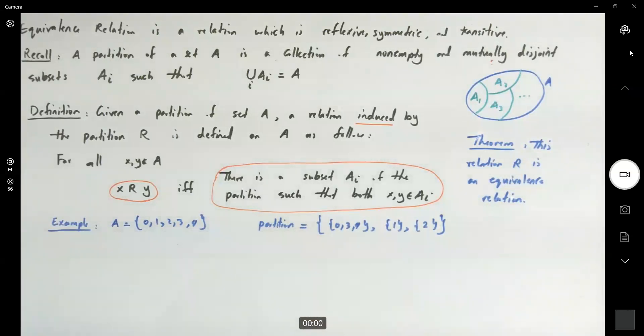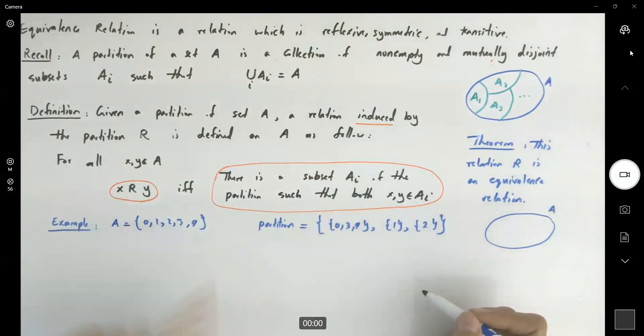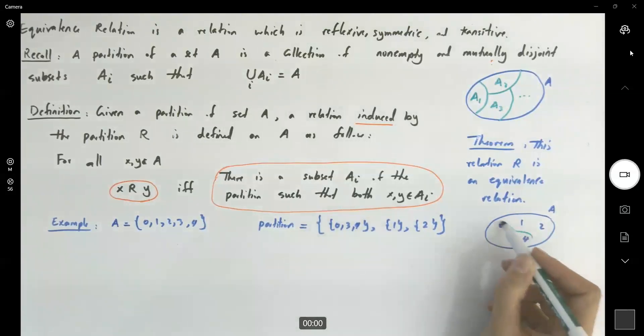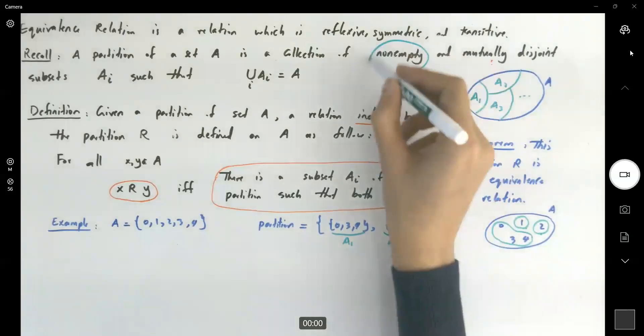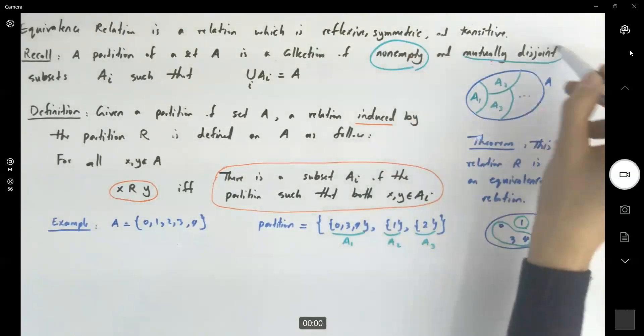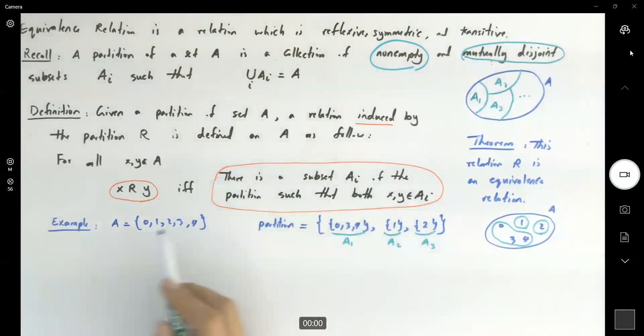If you just graph that set A, this is my set A: 0, 1, 2, 3, 4. The very first partition is {0, 3, 4}. The second one is {1}. And the third one is {2}. They are non-empty. This is A1, this is A2, and this is A3. They are all non-empty. They are disjoint. They have nothing in common. And their union is equal to set A.